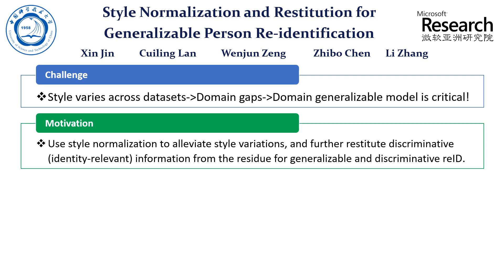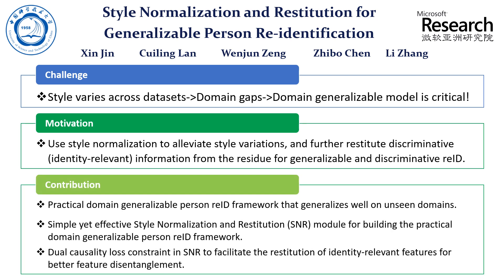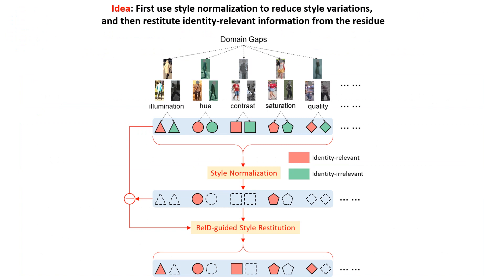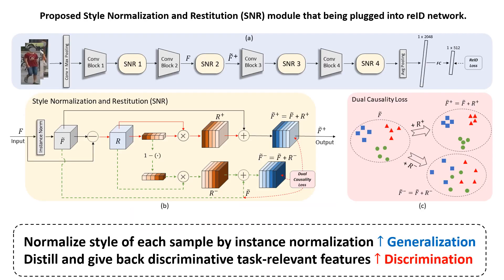We solve this problem with the proposed style normalization and restitution module. We first use style normalization to reduce style variations, and then restitute identity-relevant information from the residue.